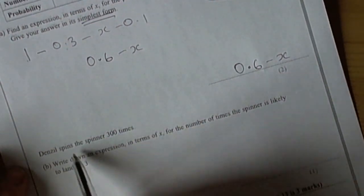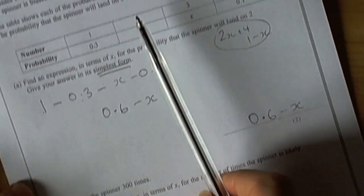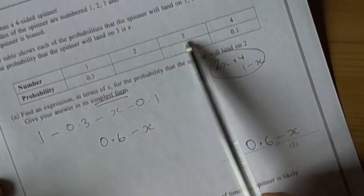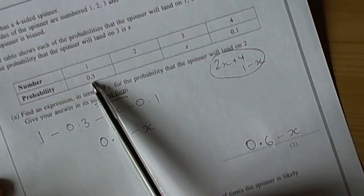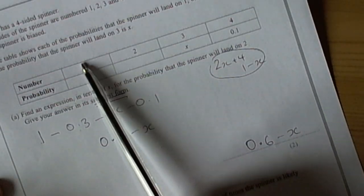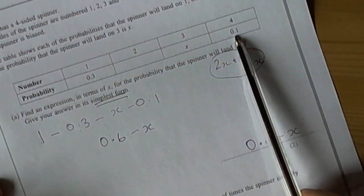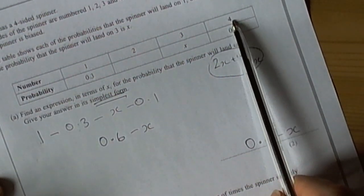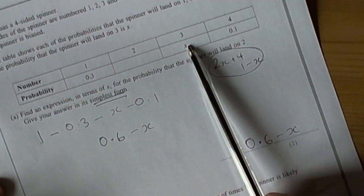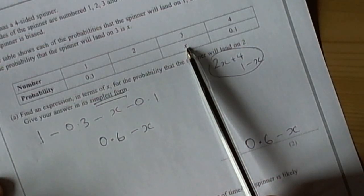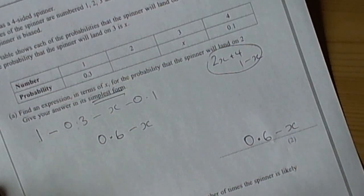It then goes on to say that Denzel is going to spin the spinner 300 times. Well the aim of a table like this is to tell us the chance of each of the numbers occurring. So this 0.3 for example is saying that 30% of the spins we'd expect the number 1 to occur.